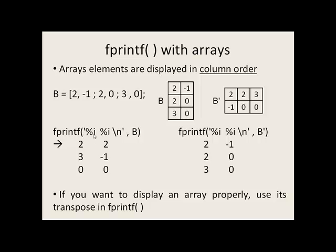If we say %i and %i \n, the first two elements of b will be printed off. But as I said earlier, we're going in column order. So two, then two will be printed off. We say \n and come to the end of the single quote. We have four more elements in b to print off, so we go back up to the beginning.